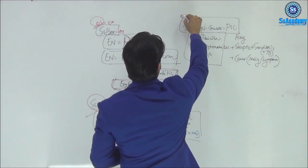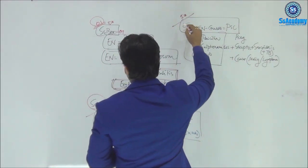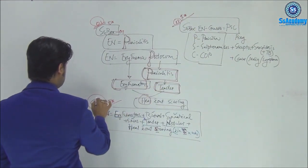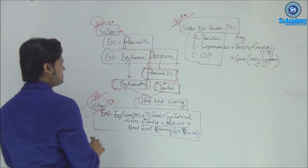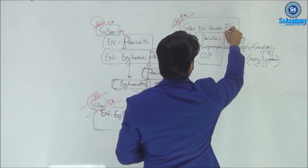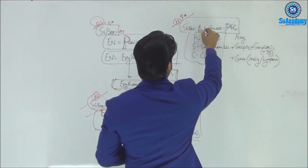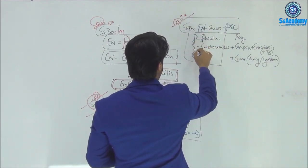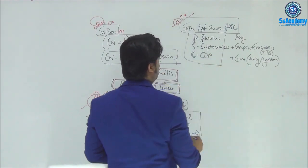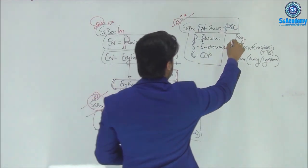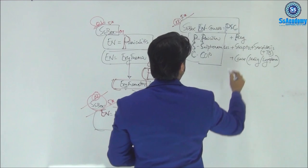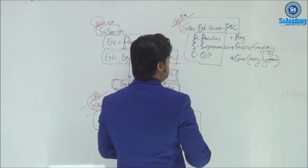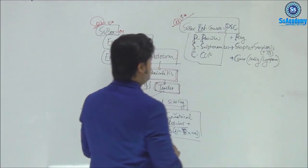This is a five-star topic for your exam. The causes — SS Box Two: PSC. Erythema nodosum causes: P for penicillin, S for sulfonamide, C for combined oral contraceptive pill. Then second group: P for pregnancy, S for streptococcal infection — which is the most common cause — C for cancer.